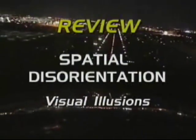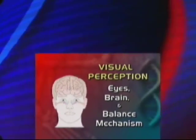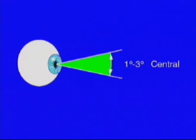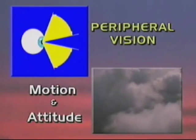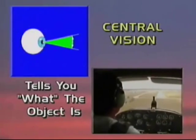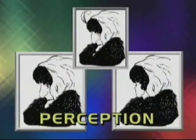Of all of the senses of the human body, vision is your most important and most dominant sense in obtaining reference information during flight. Visual perception involves your eyes, brain, and balance mechanism. The functions of the eye include central and peripheral vision. Peripheral vision will give motion and attitude cues but poor visual detail. Central vision tells you what the object is, gives you distance and depth perception, and lets you see fine details. What you have experienced and what you expect to see influence perception.